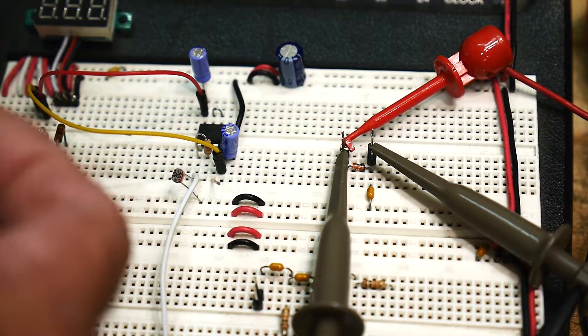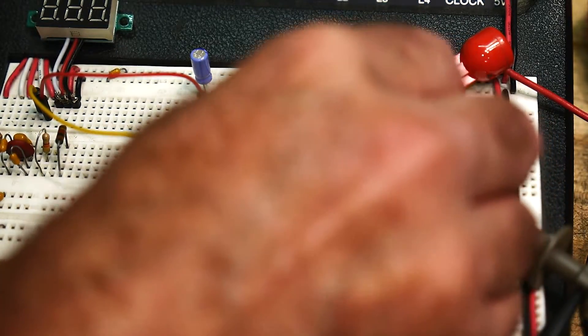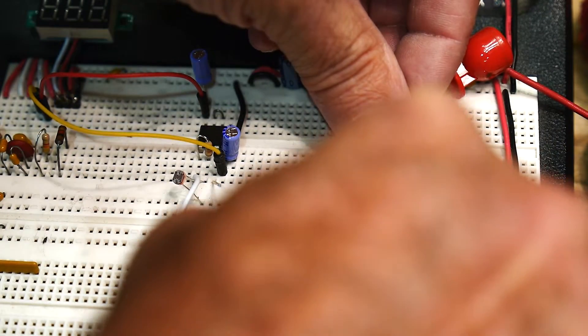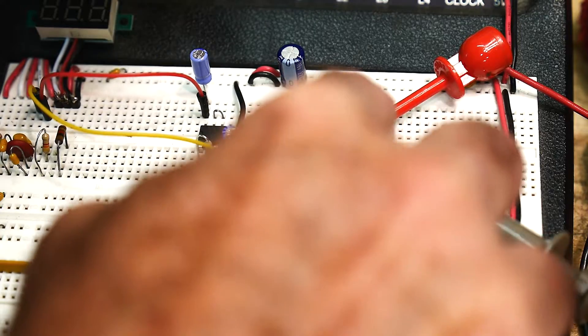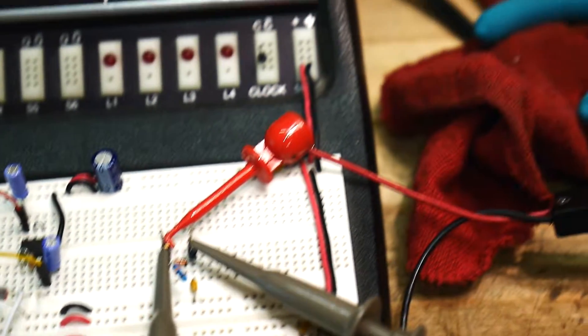I'm putting in a 100k ohms. There we go. Okay, so 100k ohms. Let's see what that does to the waveform.